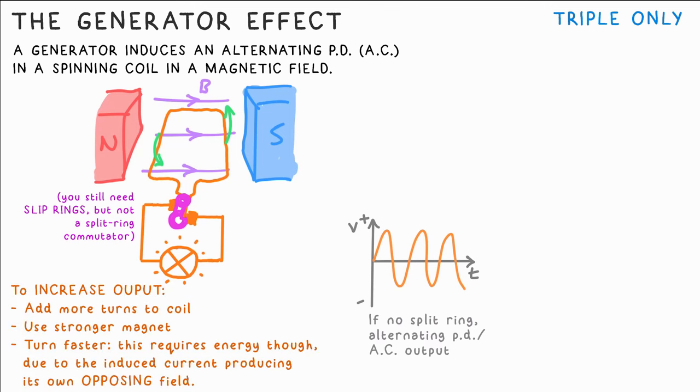All that it means is that it's an alternating PD that's produced or alternating current AC. To increase the output of a generator just turn it faster or add more turns to the coil or use a stronger magnet. The current induced in the coil also produces its own magnetic field and this opposes the turning that led to it being produced to begin with. So that's why it requires energy to keep it turning. You can't just start it turning and then it carry on, otherwise that would mean you'd be getting energy for nothing.